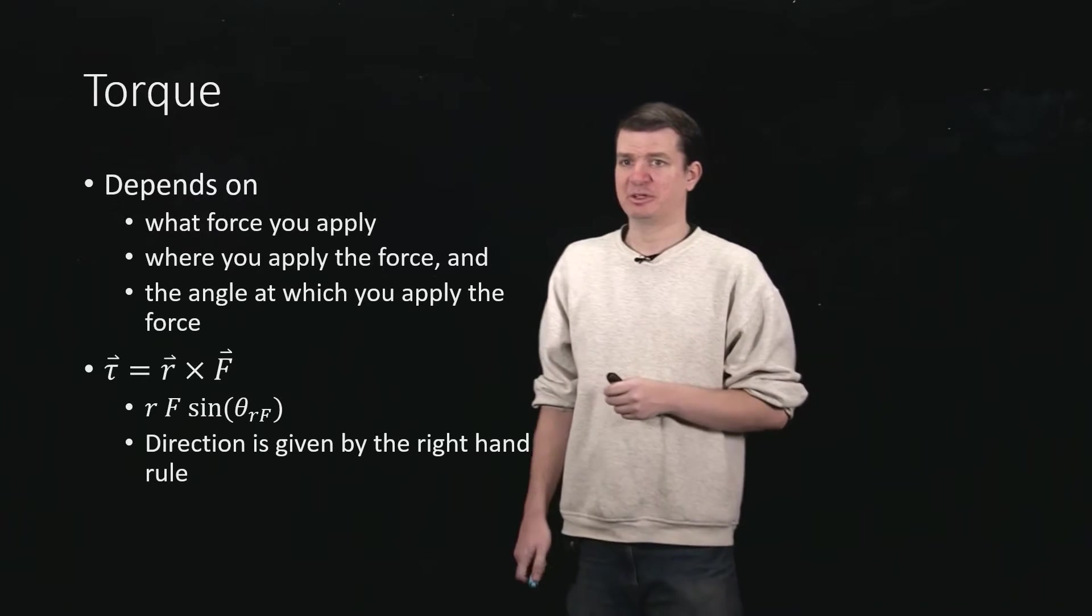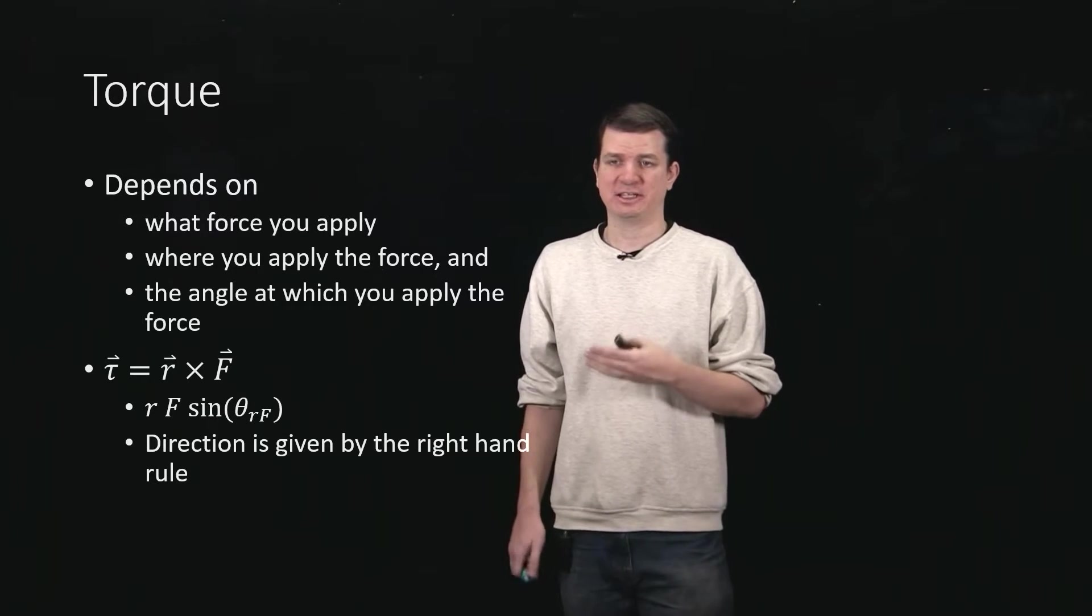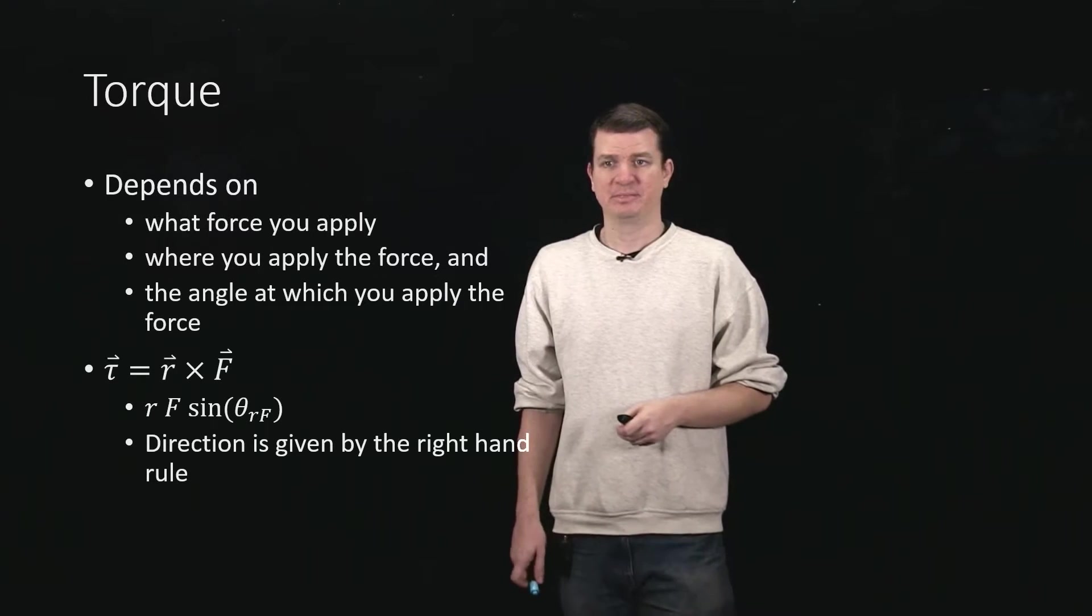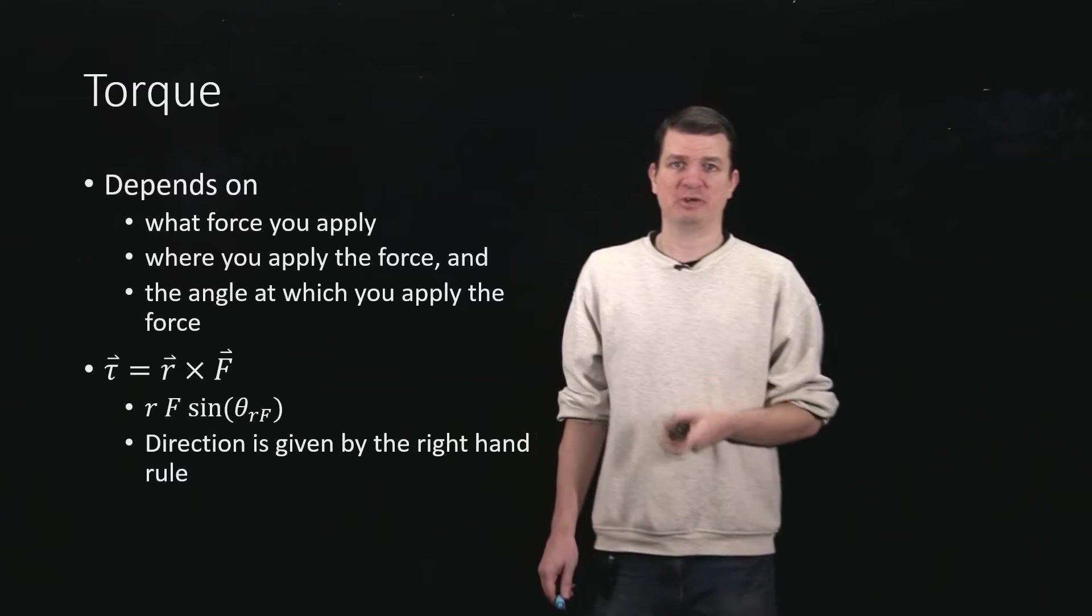So remembering what cross products do, that just means you're going to take the magnitude of r times the magnitude of F and multiply by the sine of the angle between them, and you'll take the direction from your right-hand rule.